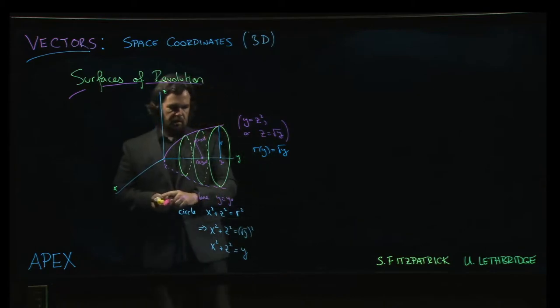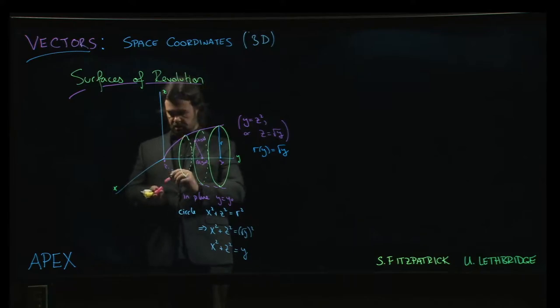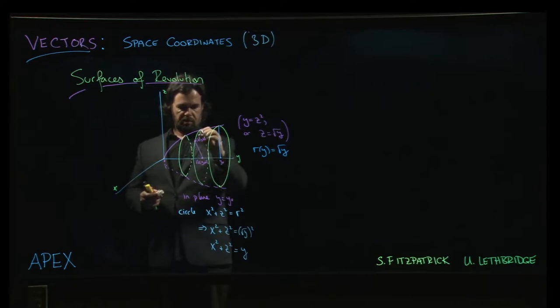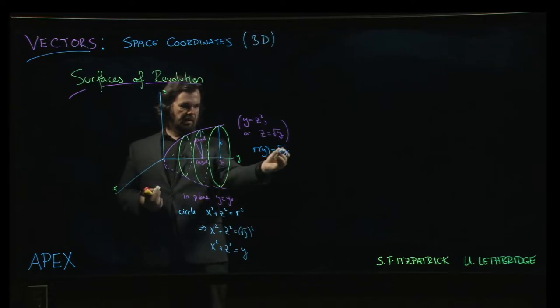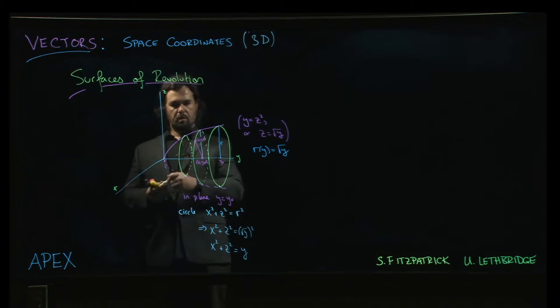So in particular, it has to be given by the sort of distance from here to here. But we know that that distance has to be the square root of y because we know that the equation of this line here in the plane x equals 0 is given by z equals root y.